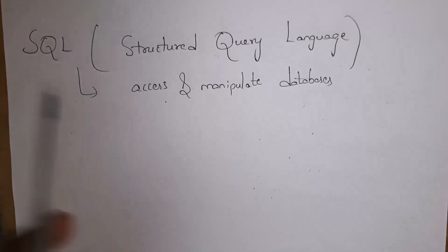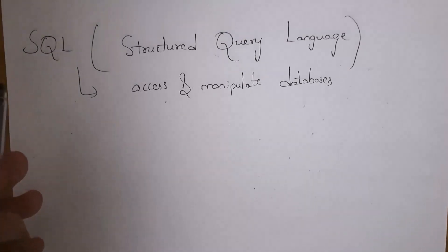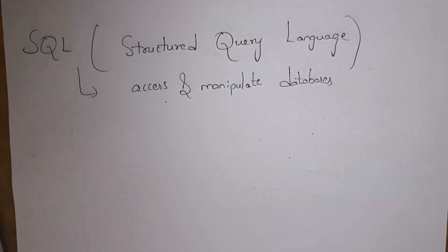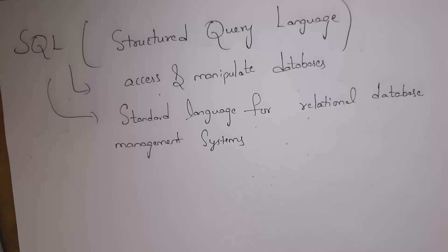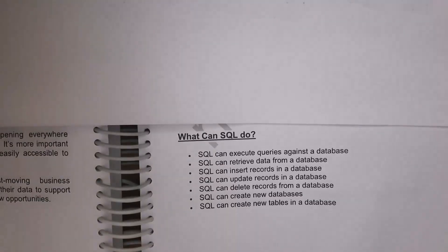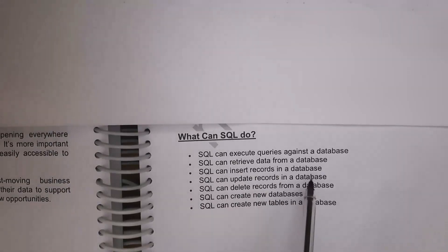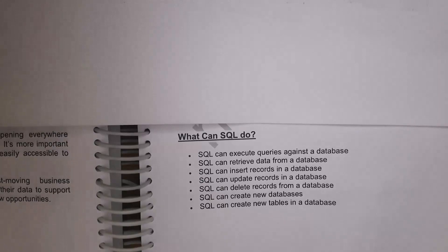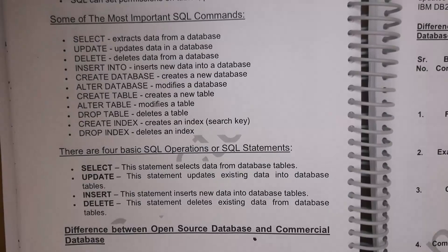SQL stands for Structured Query Language. In software companies, employees pronounce it as 'SQL', not 'S-Q-L'. By using SQL we can access and manipulate databases. SQL is the standard language for Relational Database Management Systems (RDBMS). Simply put, we use SQL to communicate with relational databases — to execute queries, retrieve data, insert records, update records, delete records, create new databases, and insert tables. Some important SQL commands include SELECT, UPDATE, DELETE, INSERT INTO, CREATE DATABASE, and more.